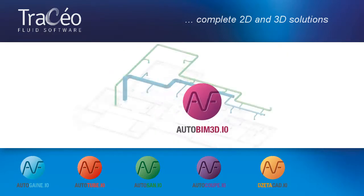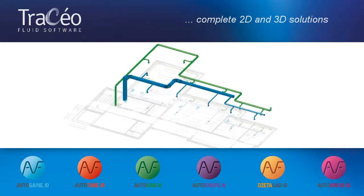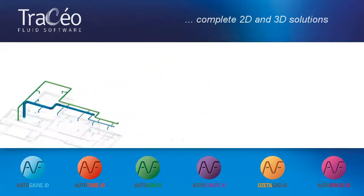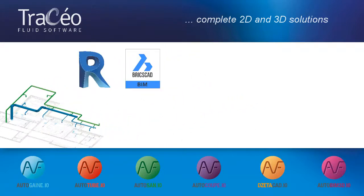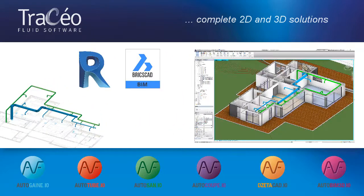AutoBeam 3D to transform into 3D what was drafted with AutoGain, AutoTube or AutoSan. These 3D networks can then be converted to IFC and imported in a beam model.